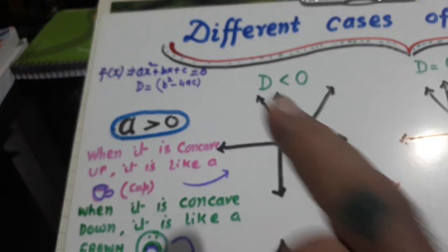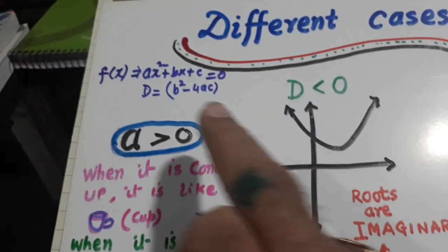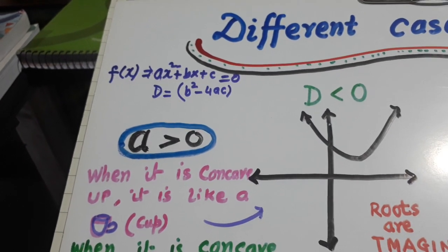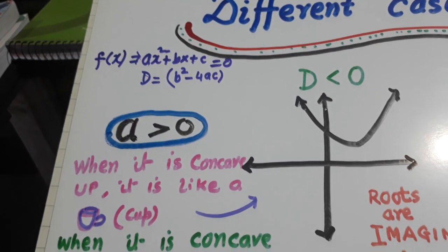Similarly, in this case, a is greater than 0. The quadratic equation is ax² plus bx plus c equal to 0. And D is b² minus 4ac.